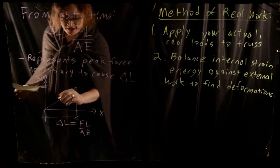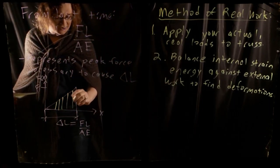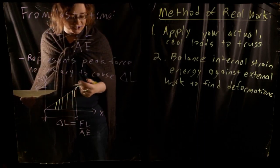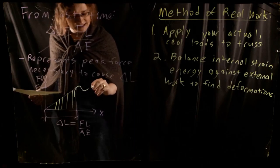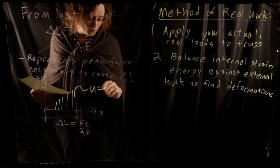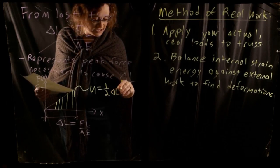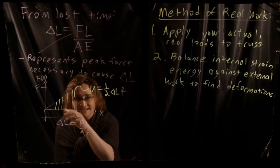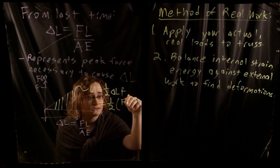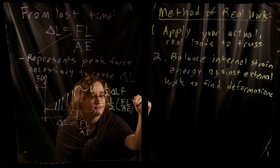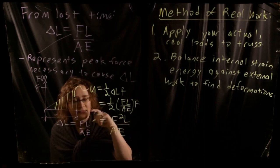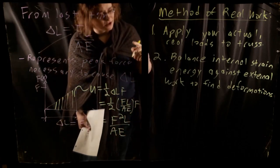We know that if we have a force-deformation diagram, the area under the curve equals the work done by the force. Using U for stored internal energy, that's a triangular area: one-half base times height, or one-half delta L times F. Substituting delta L = FL/AE, we get F squared L divided by 2AE. That is the internal strain energy stored in a single member of the truss.